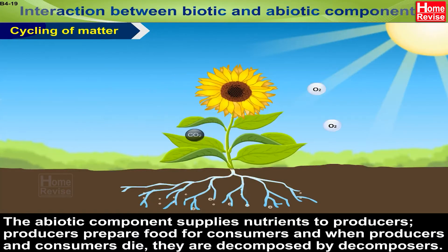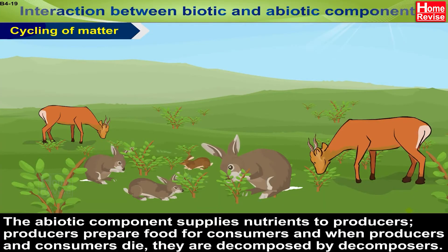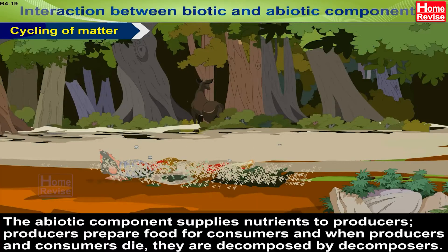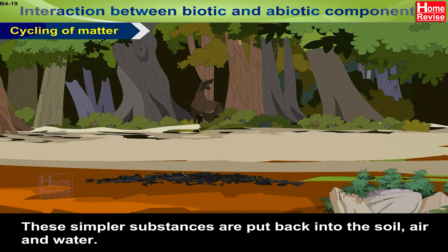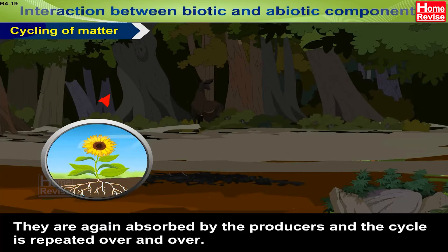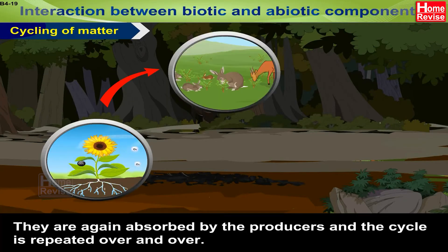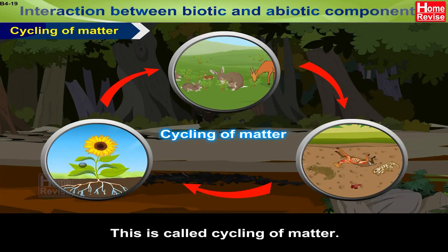The abiotic component supplies nutrients to producers. Producers prepare food for consumers. And when producers and consumers die, they are decomposed into simpler substances by decomposers. These simpler substances are put back into the soil, air, and water. They are again absorbed by the producers and the cycle is repeated over and over. This is called cycling of matter.